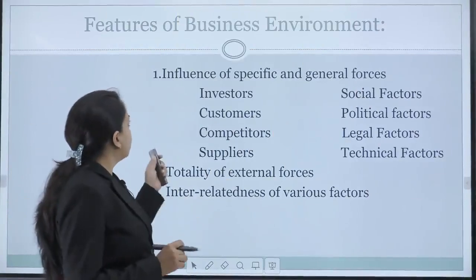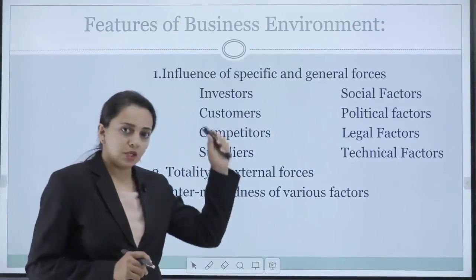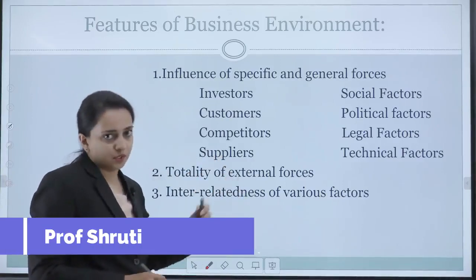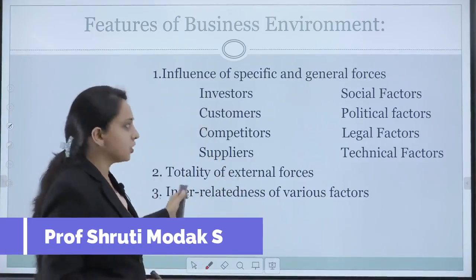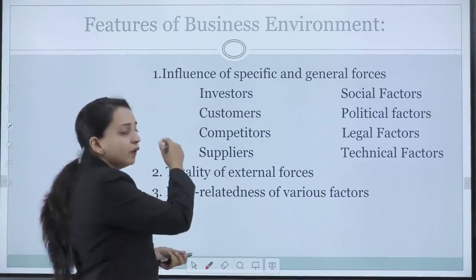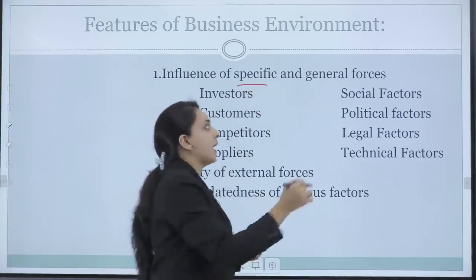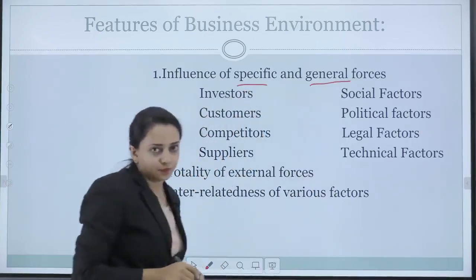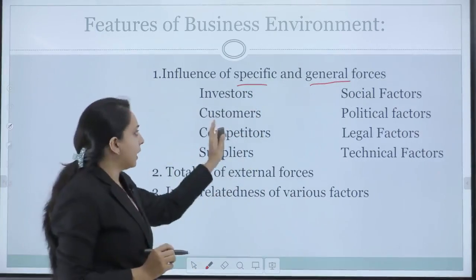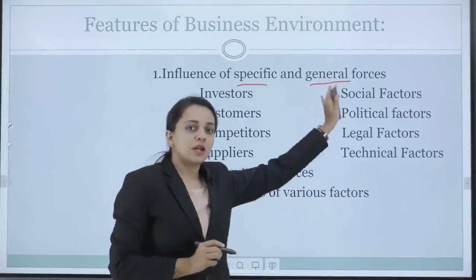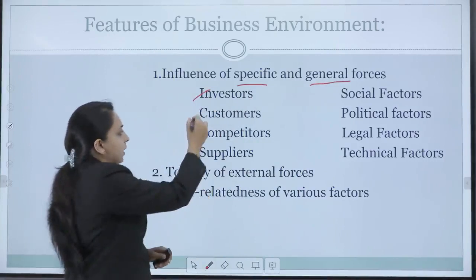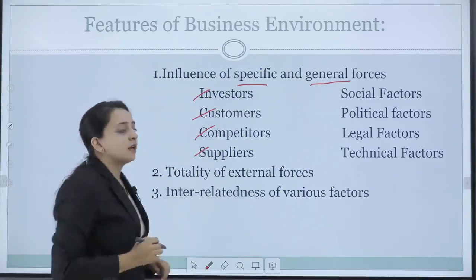Next, we go to the features of business environment. These are the different features that affect the business or come under business environment. The first one is influence of specific as well as general forces. We have two types of forces: the specific force and the general force. Specific forces include investors, customers, competitors, as well as suppliers.